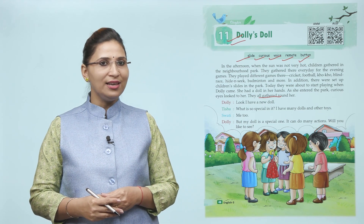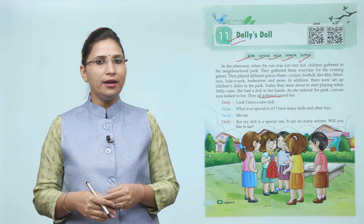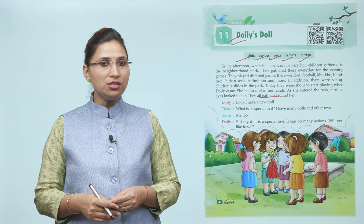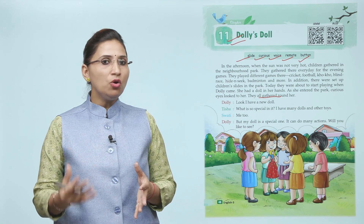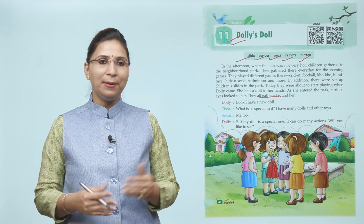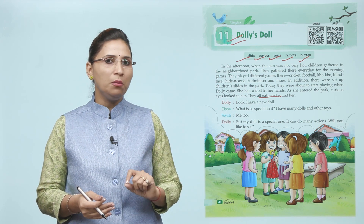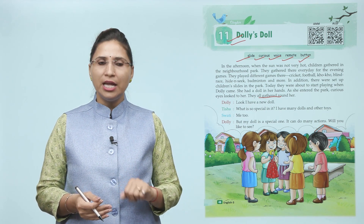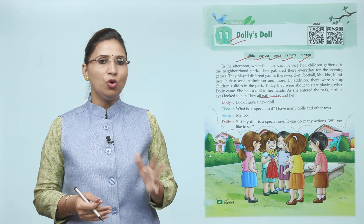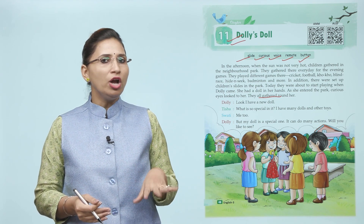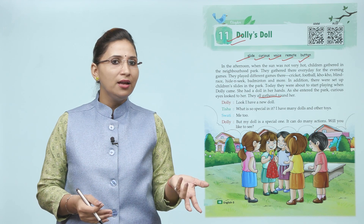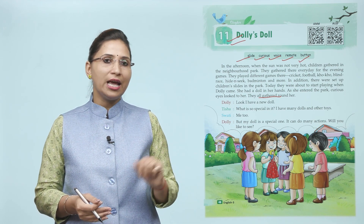Dolly said: Look, I have a new doll. Tisha boli: What is so special in it? I have many dolls and other toys. Swati: Me too. Dolly: But my doll is a special one — it can do many actions. Will you like to see? Toh yahan conversation chal raha hai — Dolly ki nai doll aayi hai, aur Tisha boli kya special hai doll mein, hamare paas bhi bahut saare toys hain. Swati bhi boli yes, hamare paas bhi hai. Phir Dolly kehti hai special one hai aur yahan bahut saare action kar sakti hai.